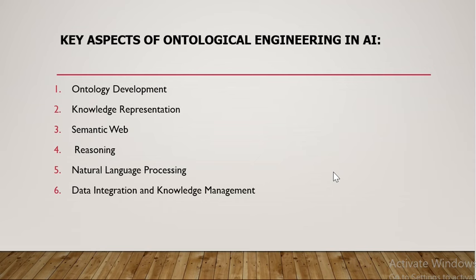What are the key aspects we are having in Ontological Engineering? There are six key aspects: the first one is Ontological Development, second one is Knowledge Representation, third is Semantic Web, then Reasoning, NLP, and Data Integration and Knowledge Management. We'll see them one by one.